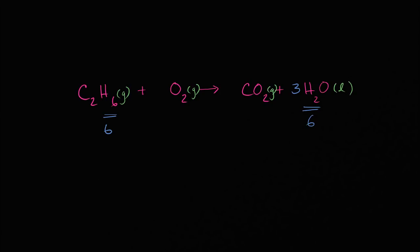Now let's go to carbon — remember, I'm saving oxygen for last. On the left-hand side I have two carbons. On the right-hand side I only have one right now, but I can change that easily. Instead of one molecule of carbon dioxide, I can have two molecules of carbon dioxide. Now my carbons are balanced: two carbons on each side.